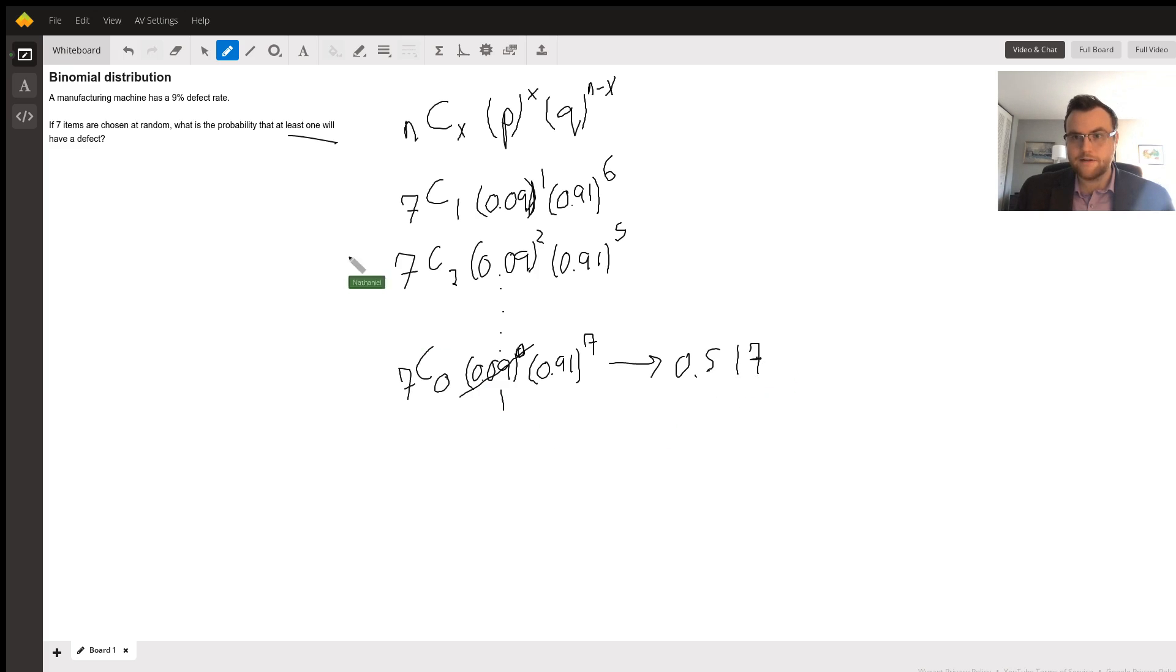So we take this, subtract it from 1, which will give us the inverse probability of what we had just solved for. And this will give us something along the lines of 0.483. So we just saved a lot of work there by only having to do one calculation instead of the whole stream of 9. And we just subtract from 1 at the end.